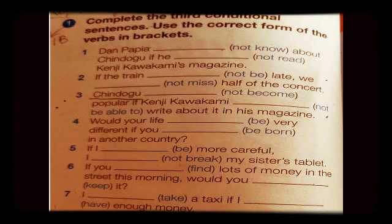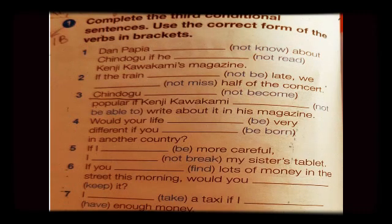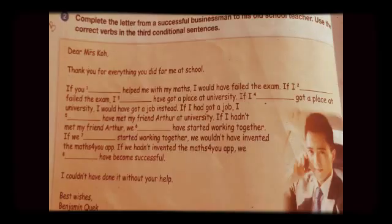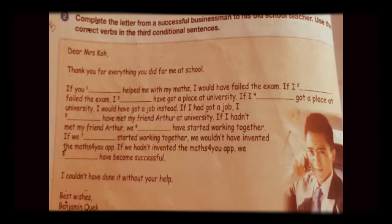Note: in 'had had', the second 'have' is acting as the main verb, not a helping verb. That completes Exercise 1. Now come to Exercise 2 — complete the letter from a successful businessman to his old school teacher, using the correct verb forms in third conditional sentences.